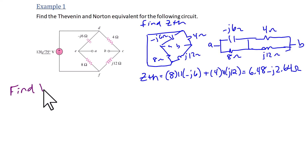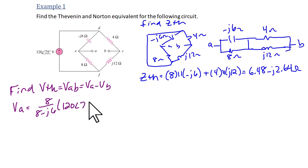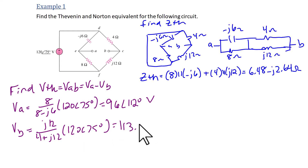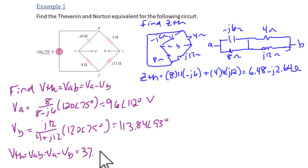Next we're going to find V Thevenin, which is VAB = VA minus VB, using the voltage divider. VA is 8 over (8 minus J6) times 120 angle 75 degrees, since the 8 ohm is attached to node A and ground, giving VA = 96 angle 112 degrees. VB is J12 over (4 plus J12) times 120 angle 75 degrees, giving VB = 113.84 angle 93 degrees. So V Thevenin = VA minus VB = 37.947 angle negative 139.7 degrees.